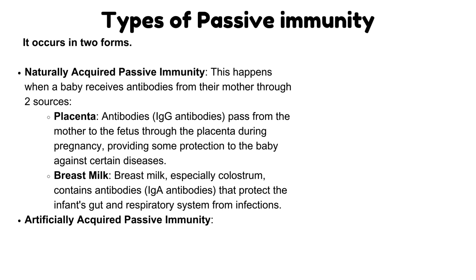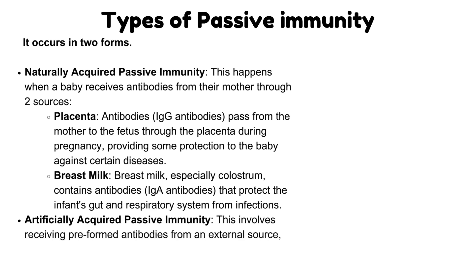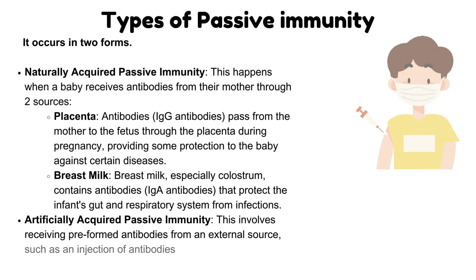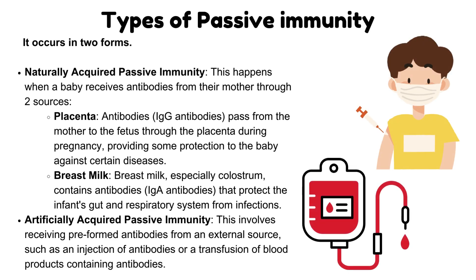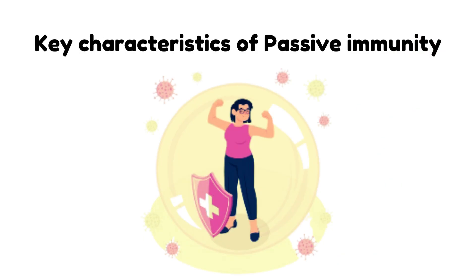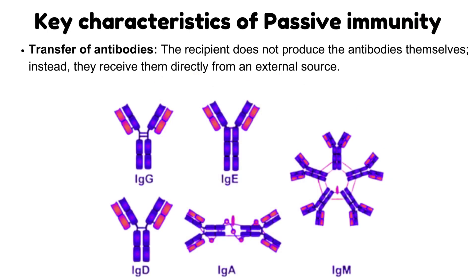Artificially Acquired Passive Immunity involves receiving preformed antibodies from an external source, such as an injection of antibodies or a transfusion of blood products containing antibodies. A key characteristic is the transfer of antibodies: the recipient does not produce the antibodies themselves; instead, they receive them directly from an external source.